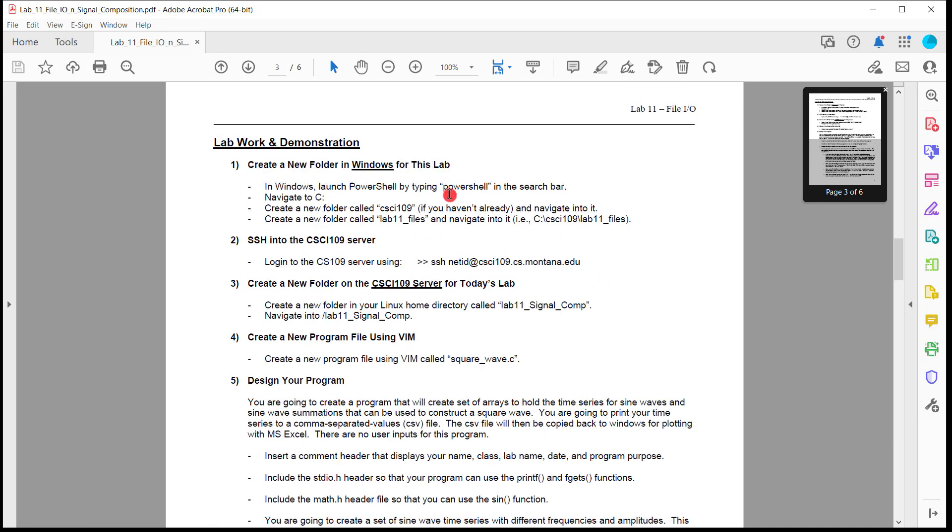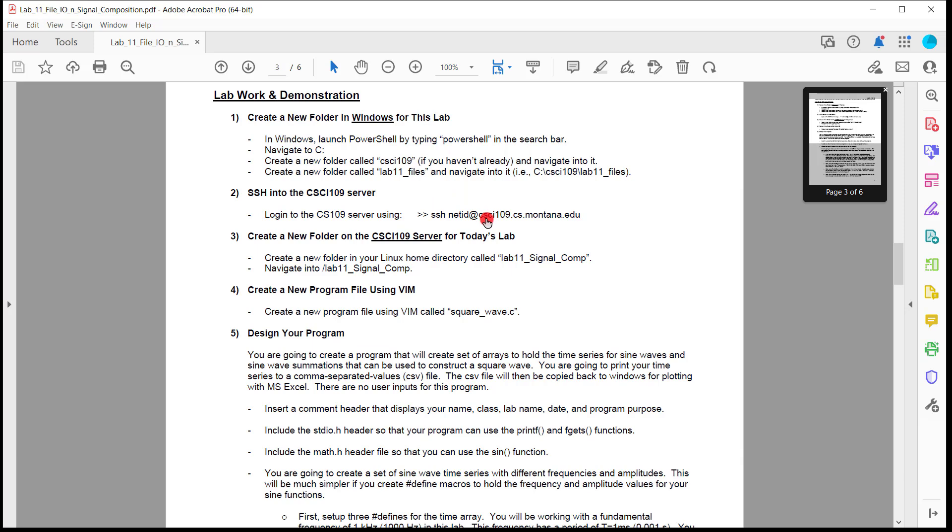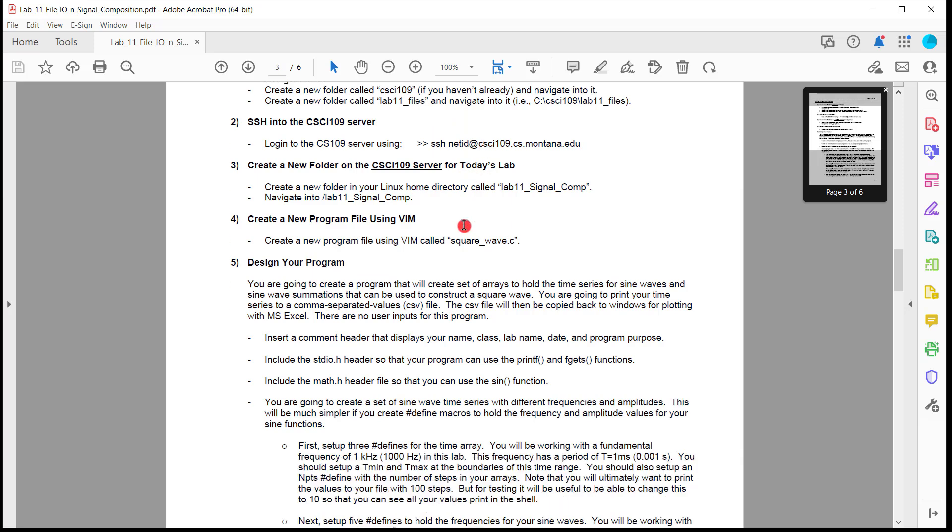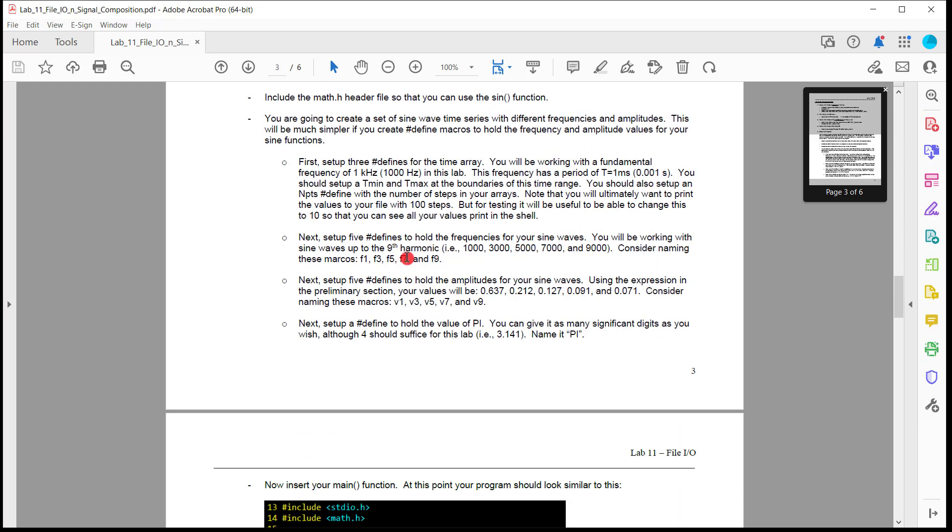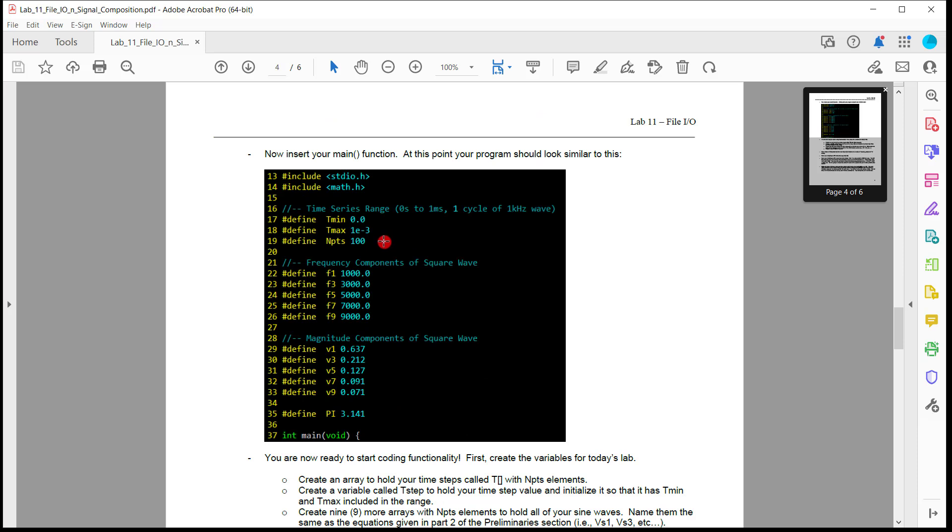And you're going to dump those to a CSV file. So it's exactly what you think. Create your files in Windows, create a new directory on the Linux server, create your thing called squarewave.c. And then you are going to use all the different coding techniques that we've learned so far to create this massive time series.